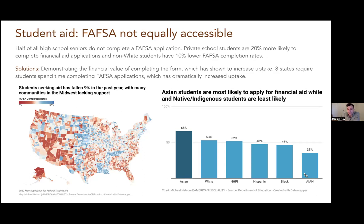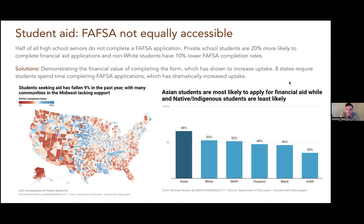On the solution side, basically just helping people understand the financial value of completing the form — seeing how much money is left on the table — is one of these classic behavioral economics approaches. In some states, they'll flash up to say, 'If you don't finish this, that's $8,000 you just lost.' Framing things in terms of losses rather than a possible gain is one of these very helpful strategies — Daniel Kahneman has done interesting work on that. Eight states require students to spend actual time completing FAFSA applications, building that into the curricula. States that have done that have seen dramatic increases in uptake.